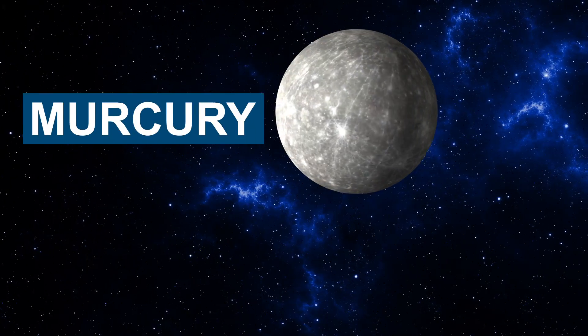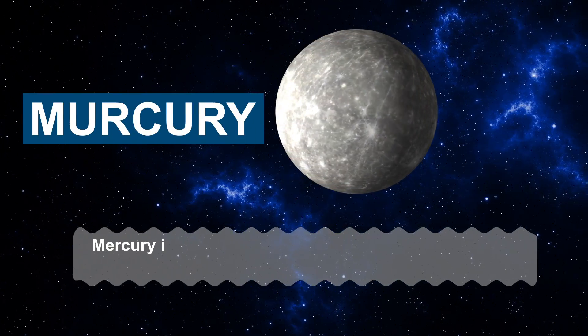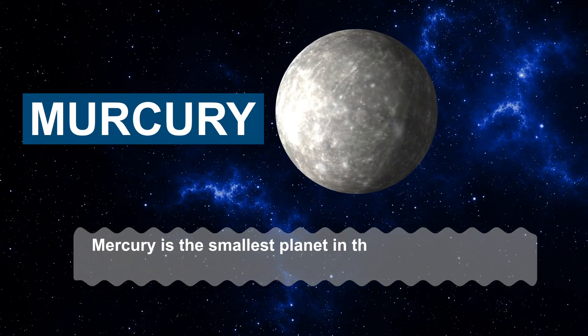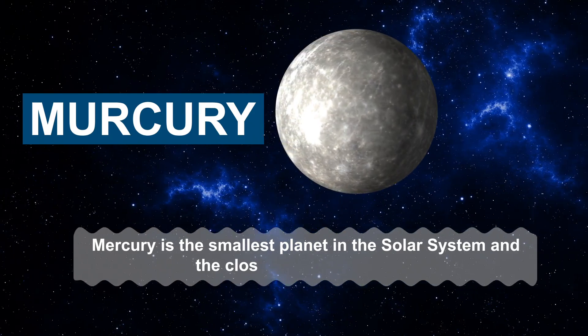Mercury is the smallest planet in the Solar System and the closest planet to the Sun.